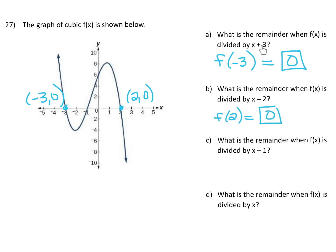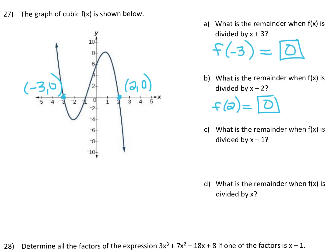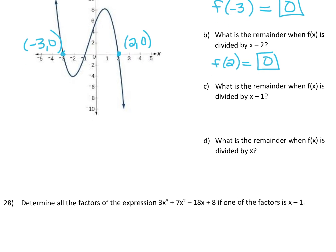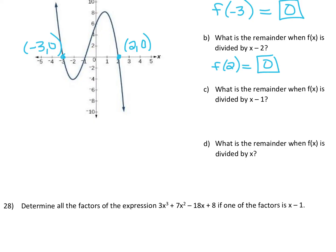Since both remainders equal 0, both x plus 3 and x minus 2 are factors of the function. Part C asks: what is the remainder when f(x) is divided by x minus 1? This time we're looking for f(1). Going to the graph at x = 1, the function is all the way up here. The coordinates of that point are (1, 8). So f(1) = 8, meaning 8 is our remainder if we divided by x minus 1.